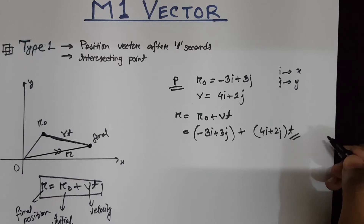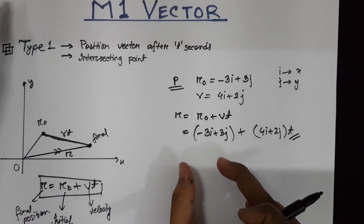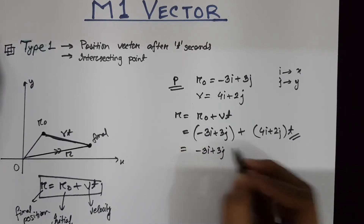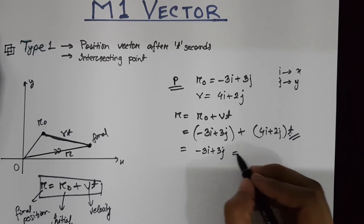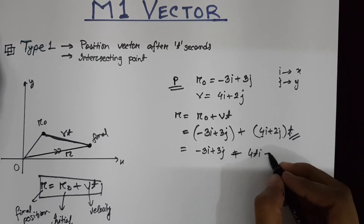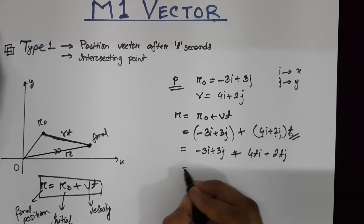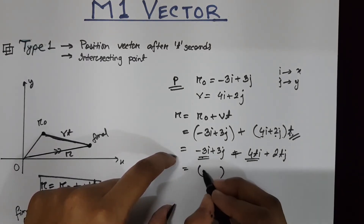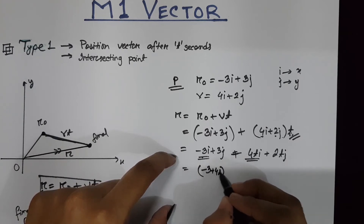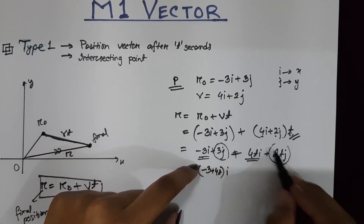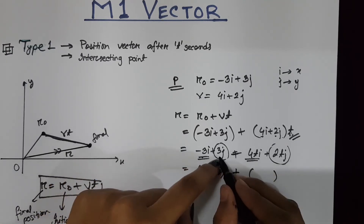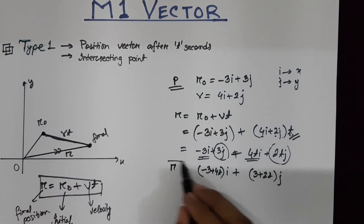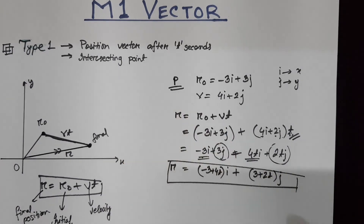You can keep your answer in that form, but it is always better to write the i-coordinate and the j-coordinate separately. Multiplying time through the two terms gives 4ti and 2tj. Combining the two i-terms gives (minus 3 + 4t)i, and combining the two j-terms gives (3 + 2t)j. So the final position of particle P after t seconds is (−3 + 4t)i + (3 + 2t)j.